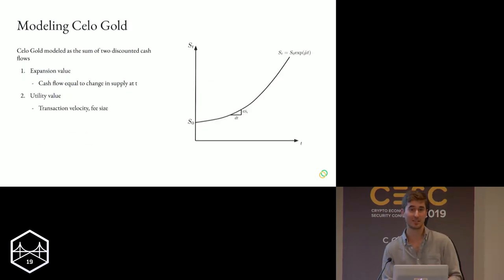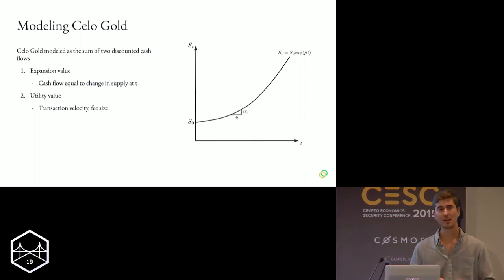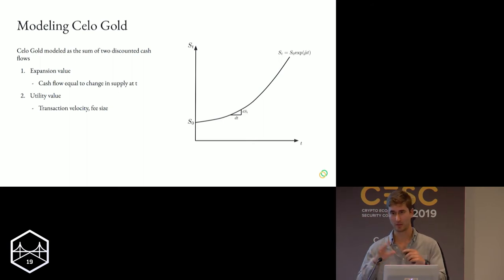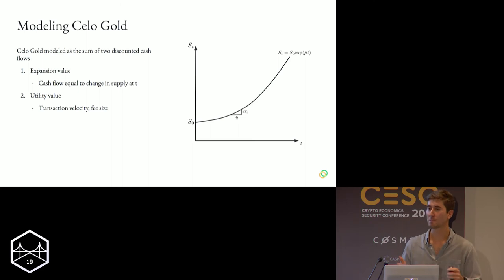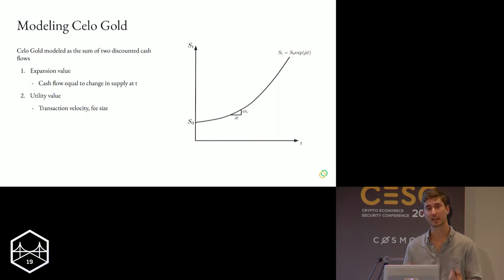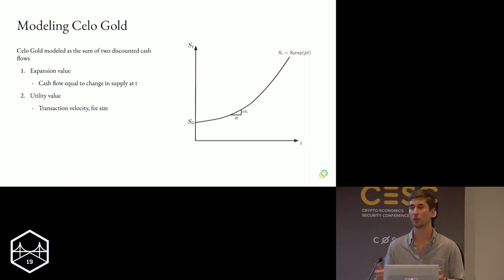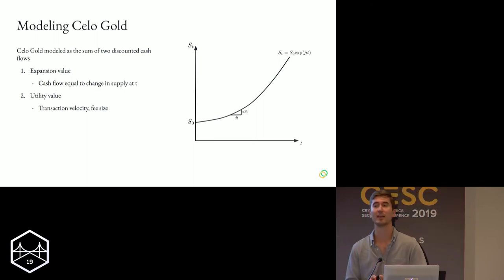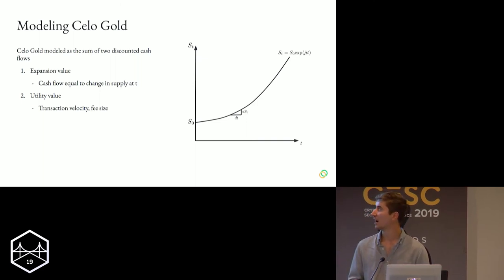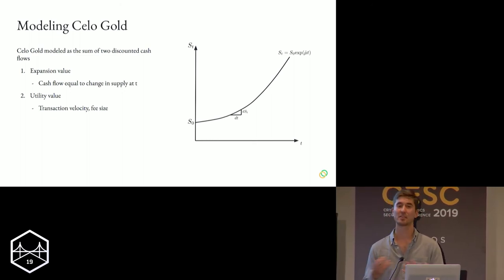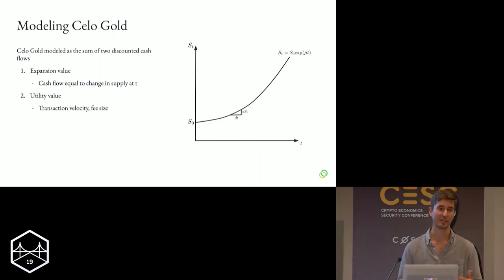That's one part of the reserve. We also need to model the Celo gold portion. Celo gold is modeled as the sum of two discounted cash flows to evaluate the stability of the protocol. The first discounted cash flow is the expansion value of Celo gold — whenever the Celo dollar price deviates from the peg, there is an arbitrage opportunity that holders of Celo gold can exploit, and that's factored in when measuring expansion value. The second is the utility value of Celo gold, which is simply its value for use as a transaction fee token — a function of transaction velocity and fee size.